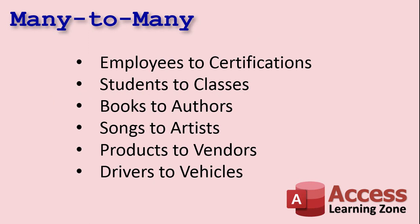A many-to-many relationship is a little more complicated, but that's what you need in this situation. Employees to certifications — multiple employees to multiple certifications. It goes both ways: each employee can have multiple certifications, and each certification can be had by multiple employees. Students to classes: a student may enroll in multiple classes, and each class will have multiple students. Books to authors and songs to artists — traditionally you'd think one-to-many, but especially lately a song can have multiple collaborators. If you want a database to know all of the artists on a song or which songs belong to an artist, you need a many-to-many relationship.